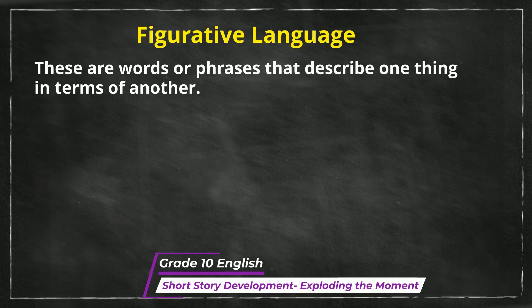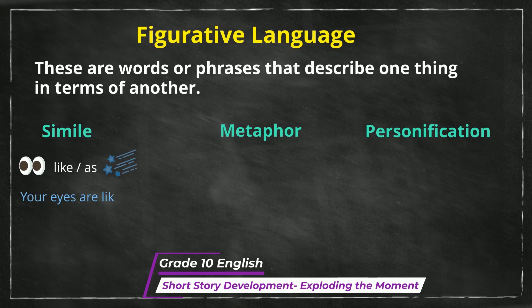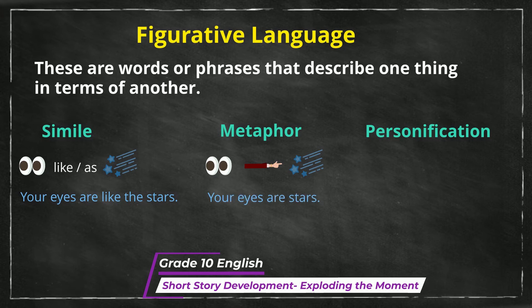In reviewing the main types of figurative language, simile, metaphor, and personification will come up. A simile is a comparison between two unlike things using the words 'like' or 'as' — for example, 'Your eyes are like the stars.' And personification is when an author gives a non-human item human traits or qualities — for example, 'My computer hates me.'